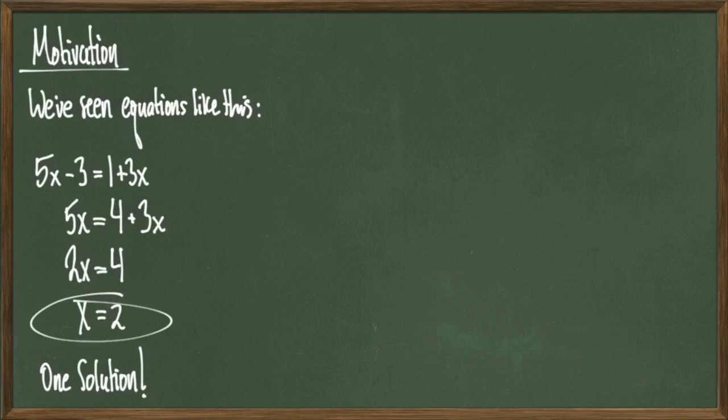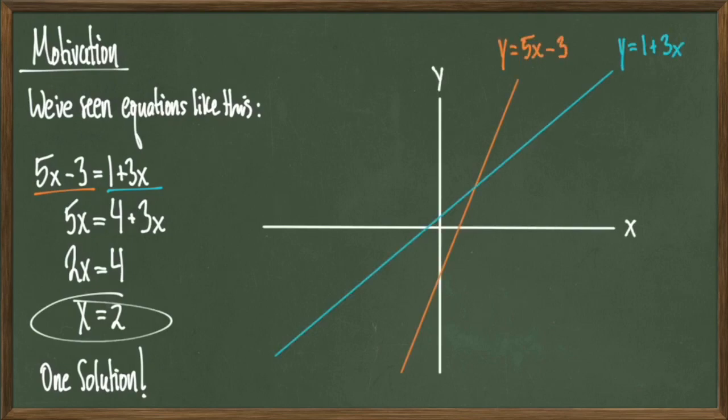To help us ease into what a linear inequality is, let's talk about this equation in a graphical sense. You aren't expected to know how to graph such equations, but at the moment just take me at my word when I say that the steep line represents 5x minus 3 and the other represents 1 plus 3x. When we solve this linear equation, in a graphical sense, we're essentially asking where do these lines intersect.